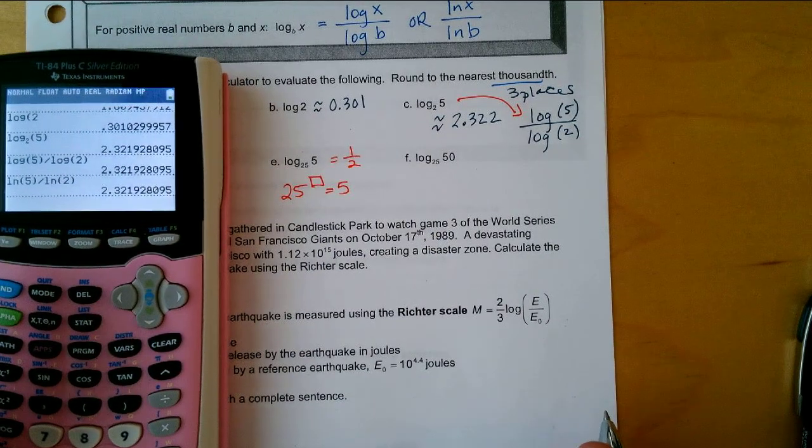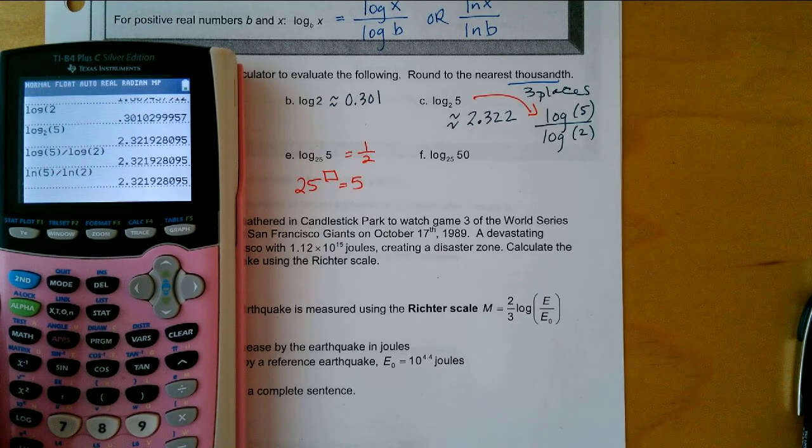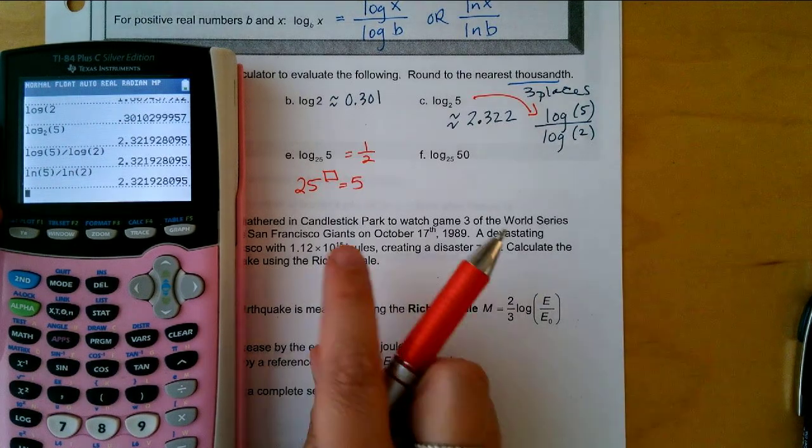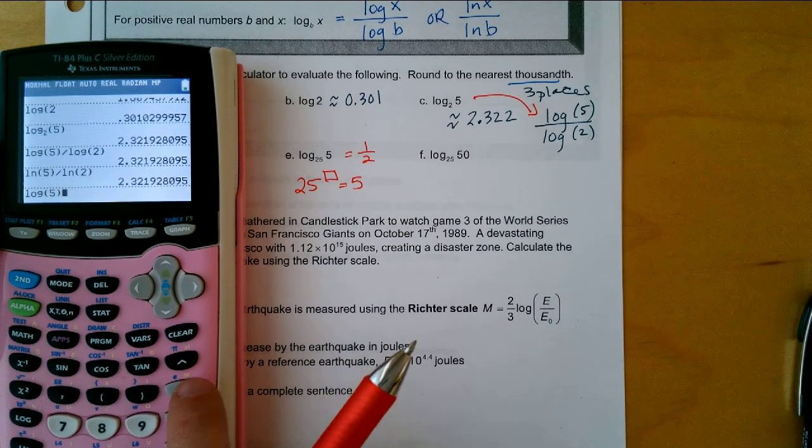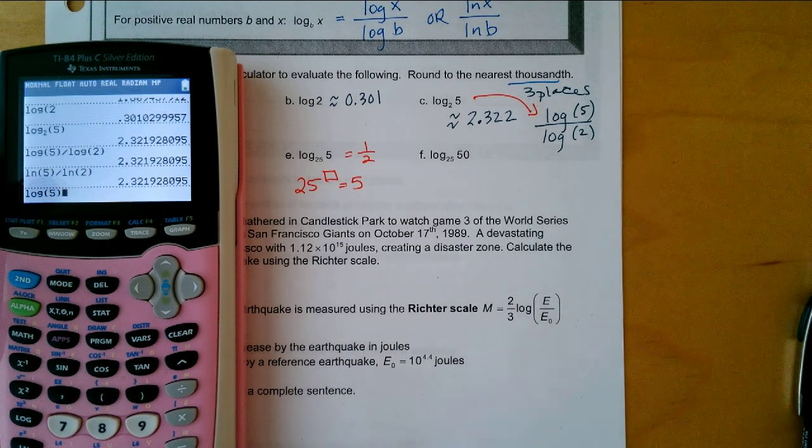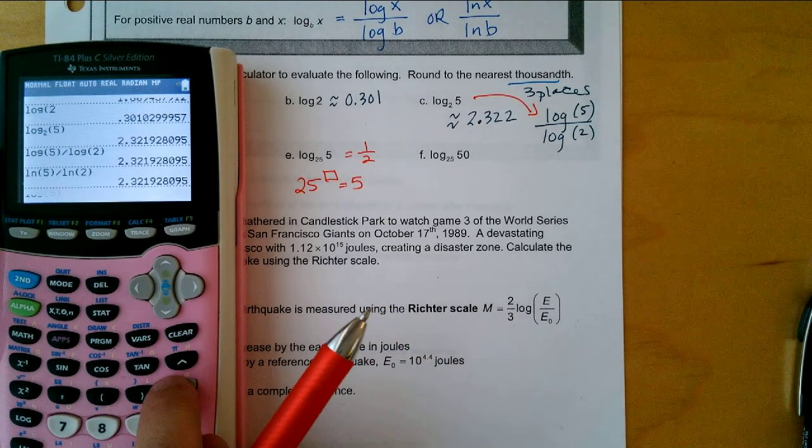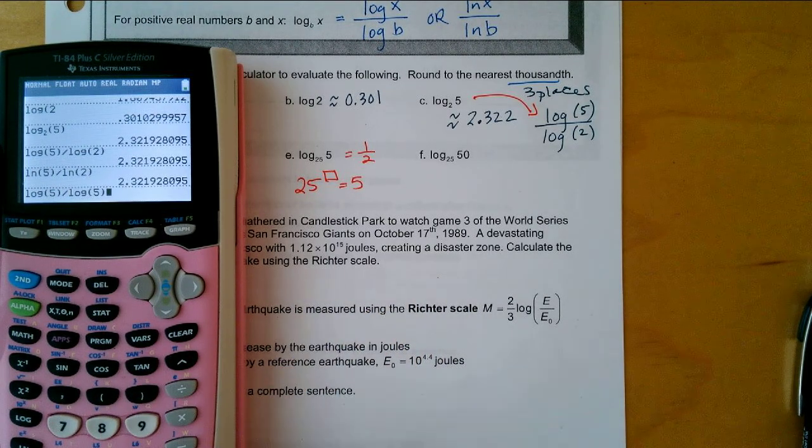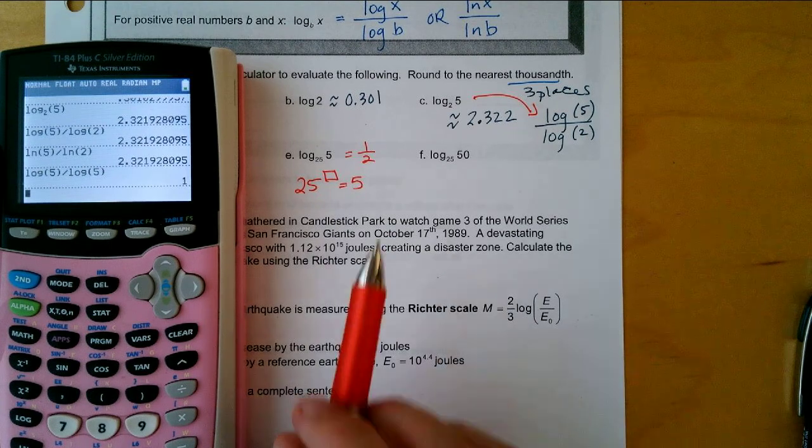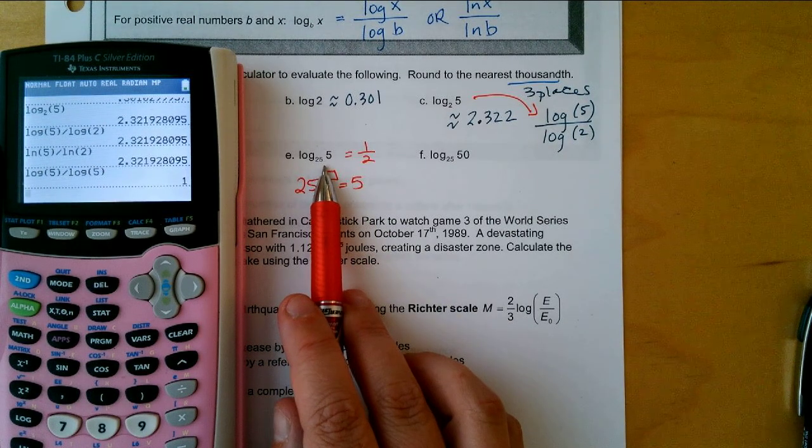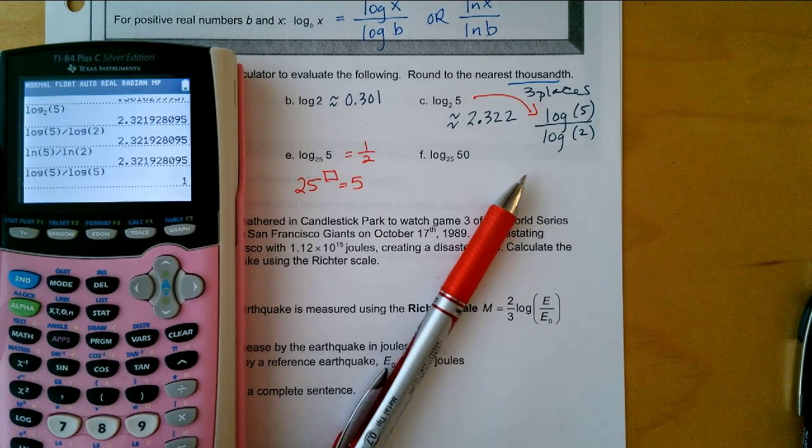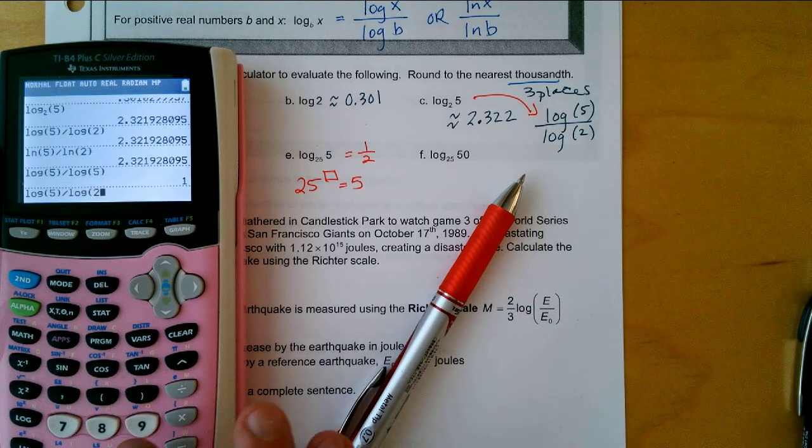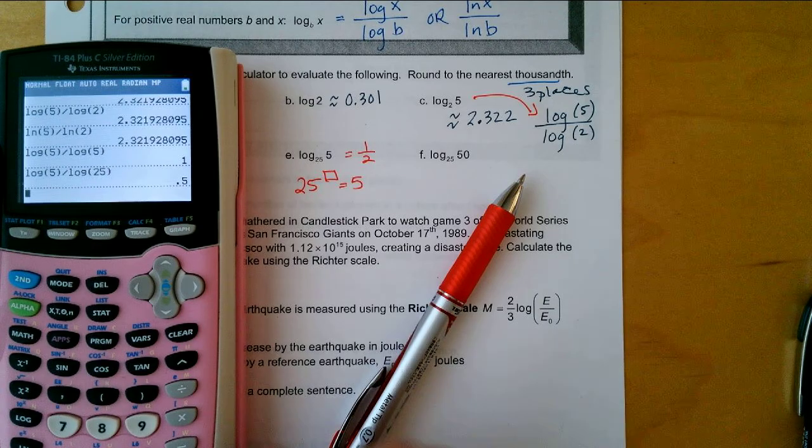Let's try this one on the calculator too. You could do log five close the parentheses. If you don't close the parentheses you won't get the right answer, divided by log of twenty five. Log of five divided by log of 25, and that gives us rounded off point five.